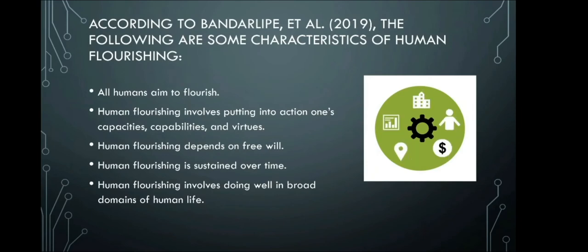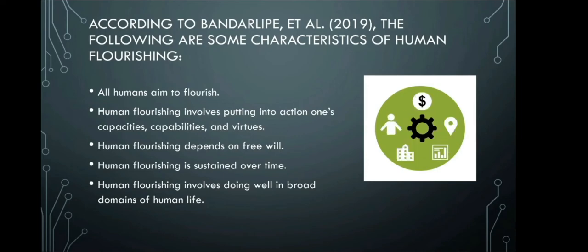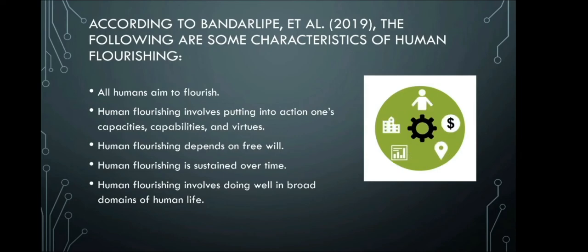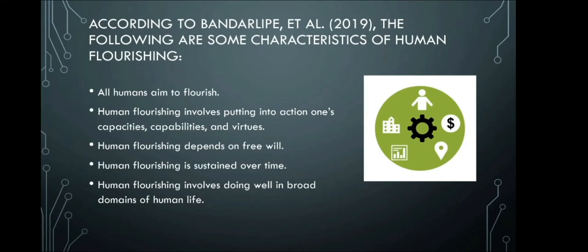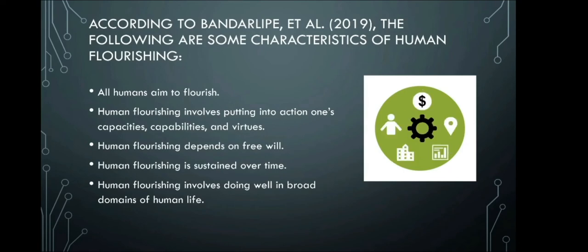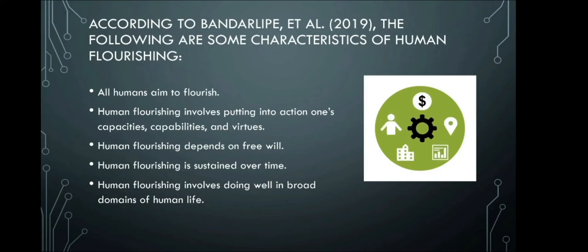According to Vanderlipe et al. in 2019, the following are some characteristics of human flourishing. Number one: all humans aim to flourish. Who among us doesn't want to grow? We are all in this institution because we want growth.